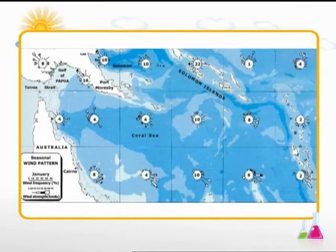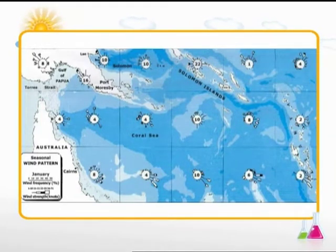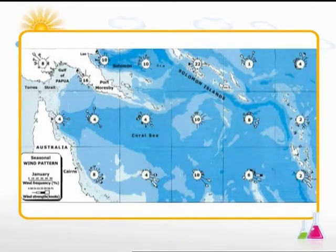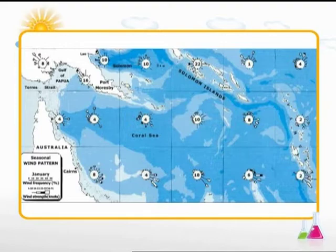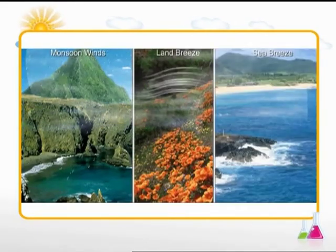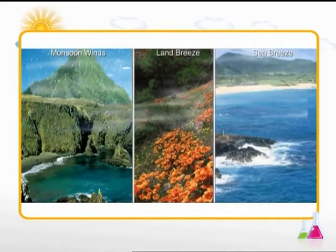Seasonal or periodic winds reverse their direction periodically due to changes in the atmospheric conditions. The main types of seasonal winds are monsoon winds, land breeze, and sea breeze.